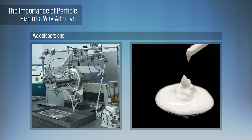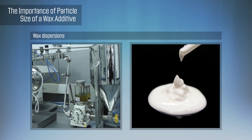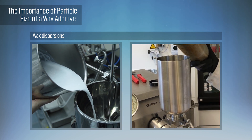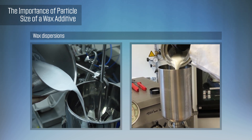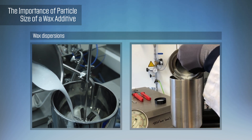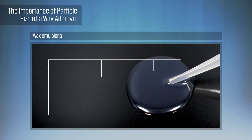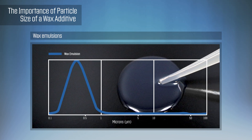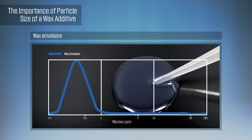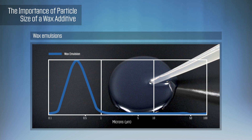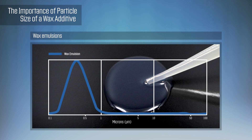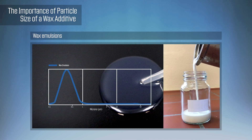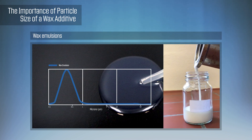Liquid dispersions of wax additives are available to ease incorporation into a solvent or water-based coating or ink. Most liquid surface-modifying dispersions are supplied with an average particle size between 3 and 12 microns. Thin film applications with a dried film thickness of less than 25 microns, such as digital inks or coatings for beverage cans, require surface modifier additives with an average particle size less than 1 micron. For these applications, emulsified products are typically required to protect the surface without impacting appearance.